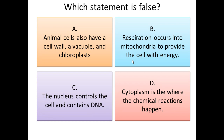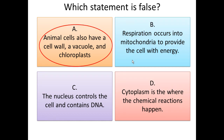The right answer is A. It says animal cells also have a cell wall, a vacuole, and chloroplasts. We know that these three structures are not found in an animal cell — they will be found in a plant cell. So let's have a look at the main characteristic features and organelles found in the plant cell.